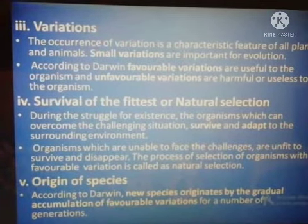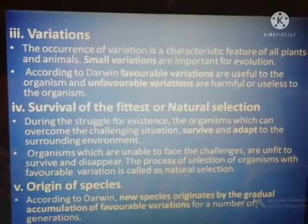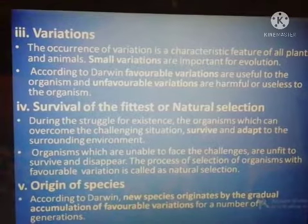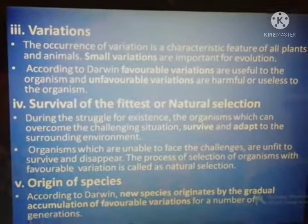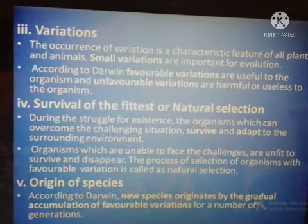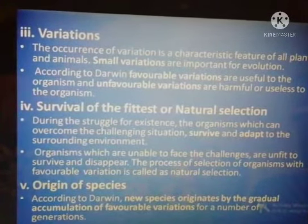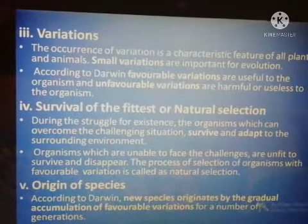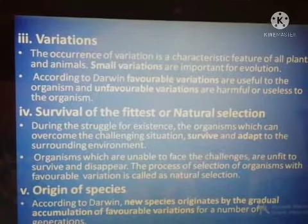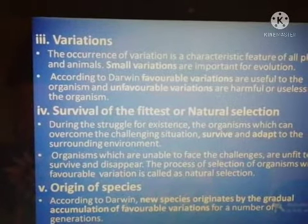The Origin of Species: According to Darwin, new species originate by the gradual accumulation of favorable variations over a number of generations. New species do not suddenly or immediately appear — it is a gradual change, a gradual accumulation of some characters, and slowly the change takes place, and then only the new organism forms.